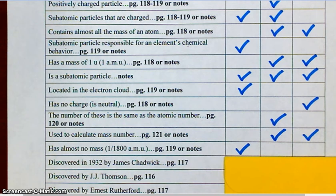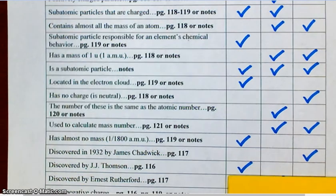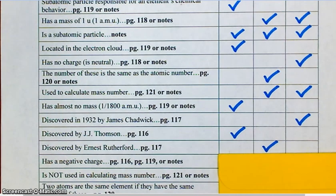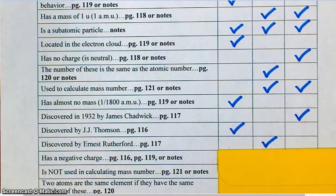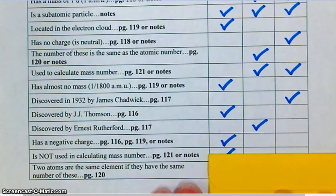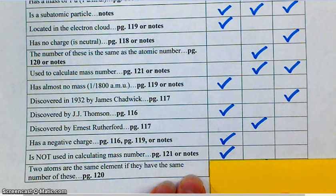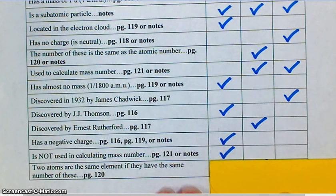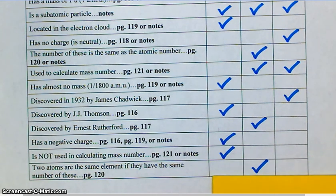Discovered by James Chadwick in 1932. Neutrons. Discovered by J.J. Thompson. Electrons. Discovered by Ernest Rutherford. Protons. Very good. Has a negative charge. Electrons. Is not used in calculating mass number. Electrons. Again, why do we not use electrons? They have almost no mass. Two atoms are the same element if they have the same number of these. Protons. Are we good?